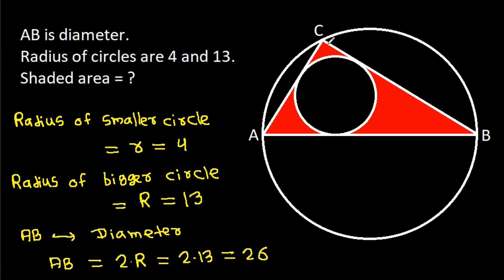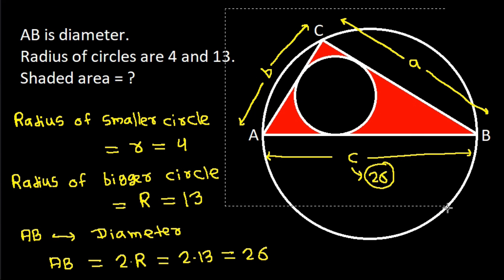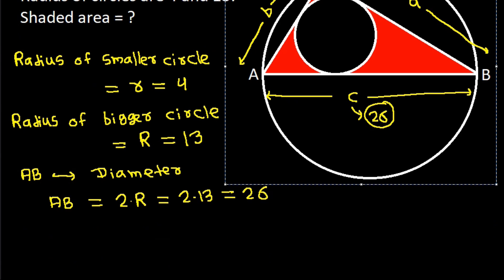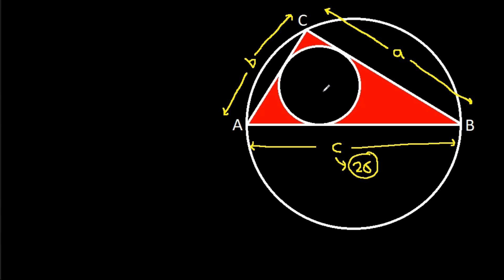Suppose BC is a, AC is b, and AB is c. Then we get c is 26. Now suppose this point is D, this point is E, and this point is F, and the center of the smaller circle is P.